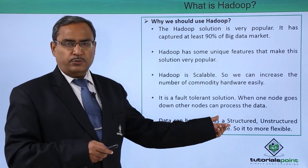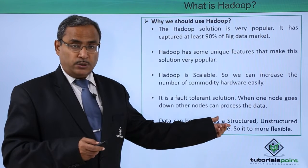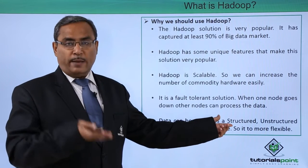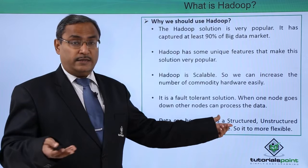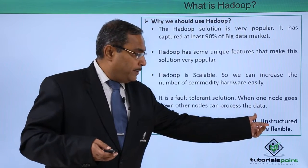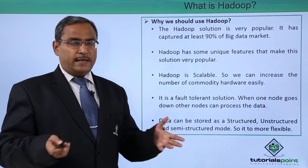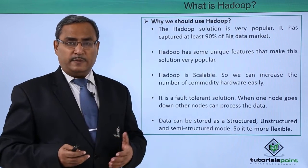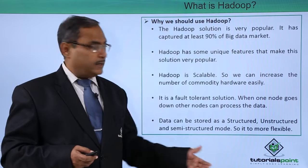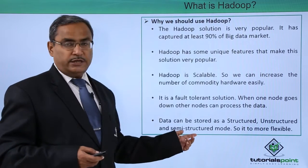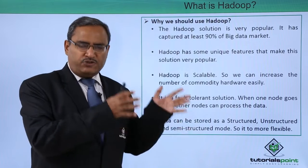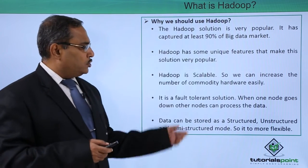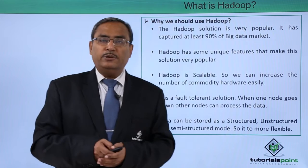In the case of structured data, we can represent our data in rows and columns — a database is a good example. Sources include web logs, machine-generated data, and sensor data. Unstructured data means the data is not structured — examples include text files, PDFs, videos, images, satellite images, and machine-generated data. Semi-structured data is something like partially structured and partially unstructured — examples include XML files and JSON files. All these types of data can be stored into the Hadoop system.